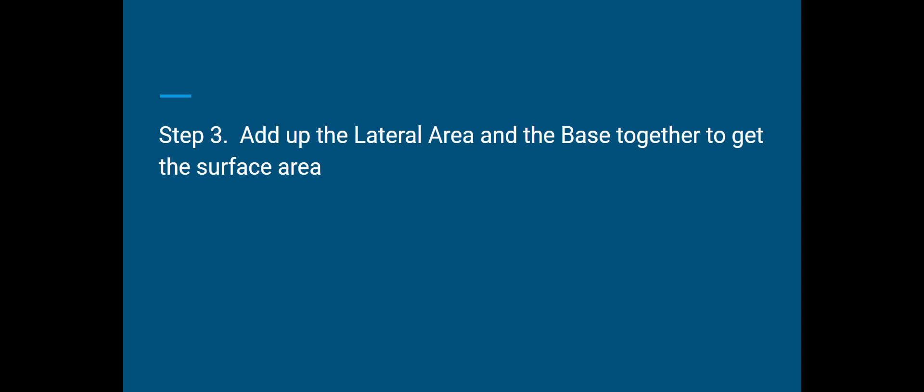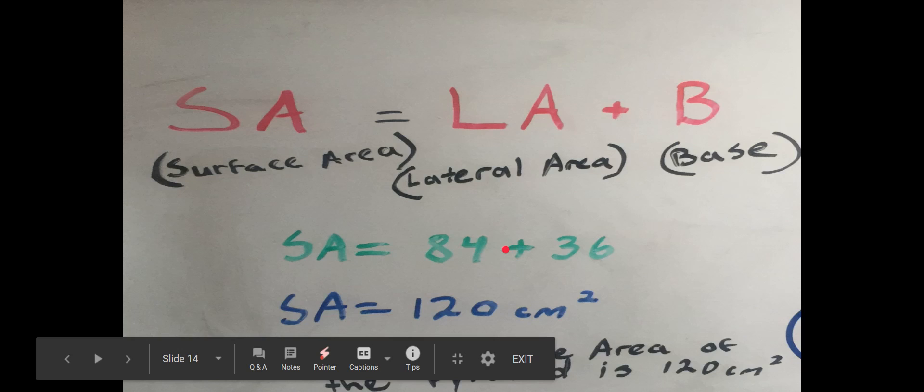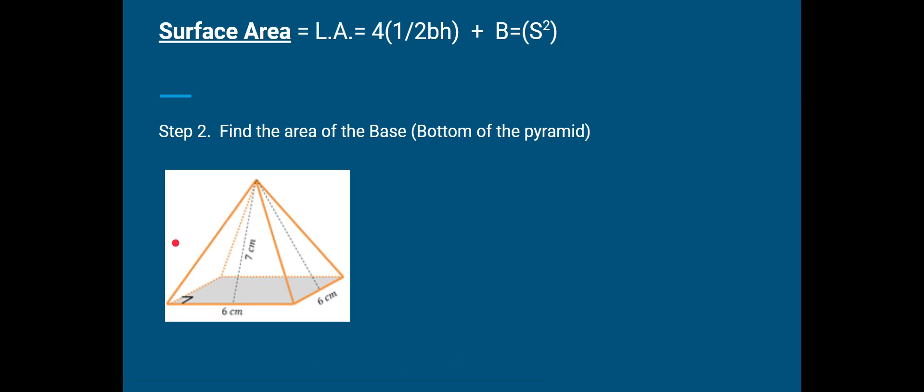Step three, add up the lateral area and the base together to get the surface area. And here we are. So we have 84 for our lateral area, which is the area of all four of our triangles. Then we have 36, which is the base of our pyramid. Together, once we add 84 plus 36, we have 120 centimeters squared. So for this pyramid right here, our answer would be 120 centimeters squared.